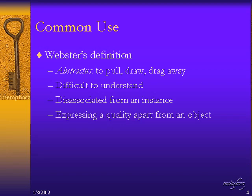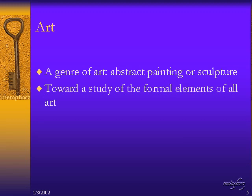When something is disassociated from an instance — if people talk conceptually about concepts and not about real-world objects like coffee cups and bicycles — then you're talking abstractly. Abstraction is expressing a quality apart from an object, which goes with the idea of talking about concepts rather than instances or particulars. Now let's look at art.